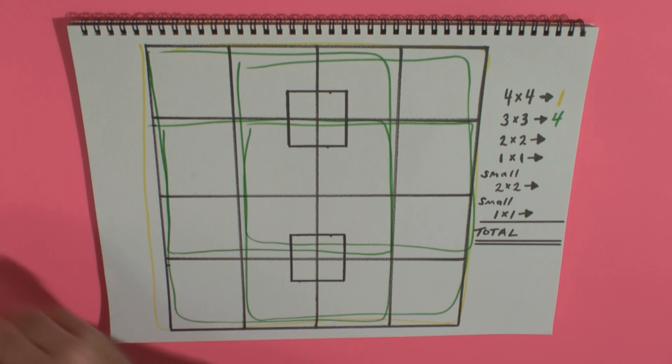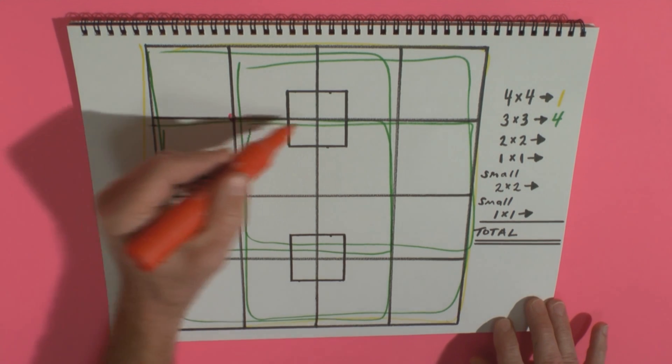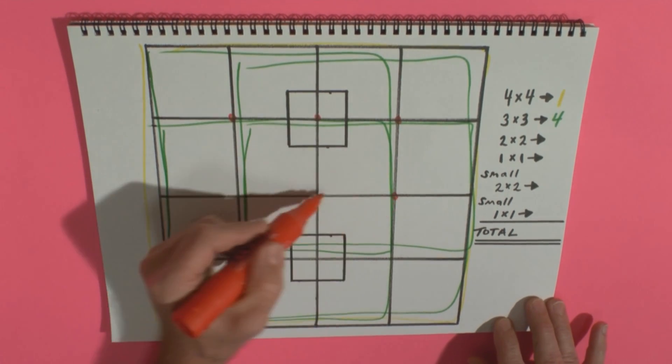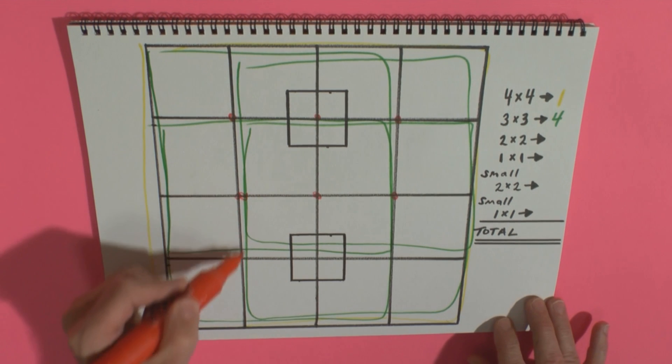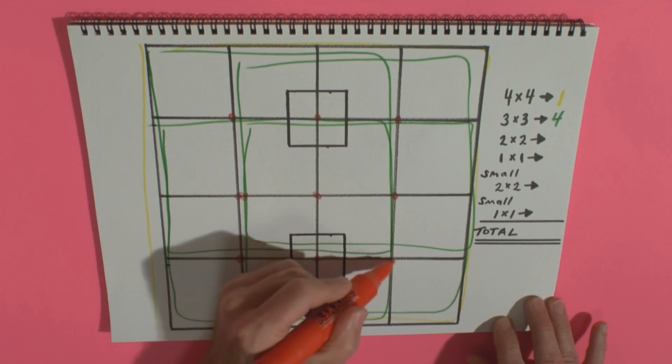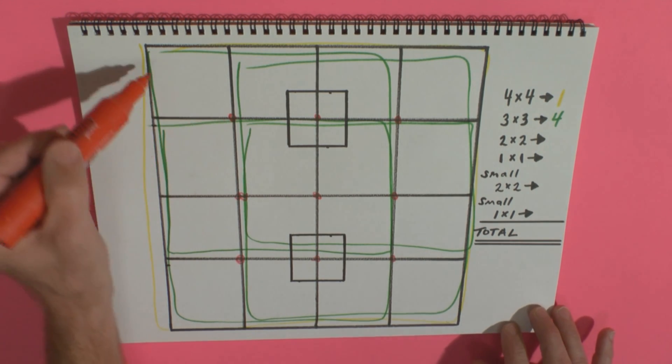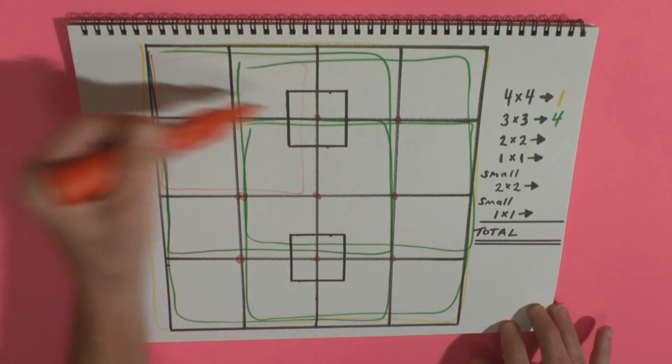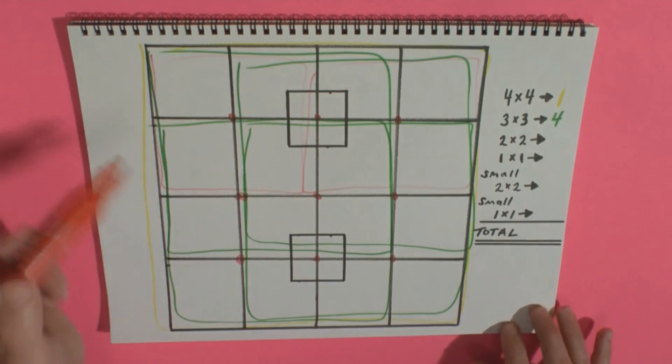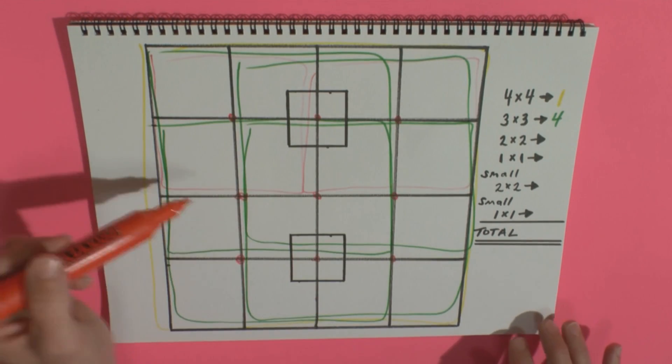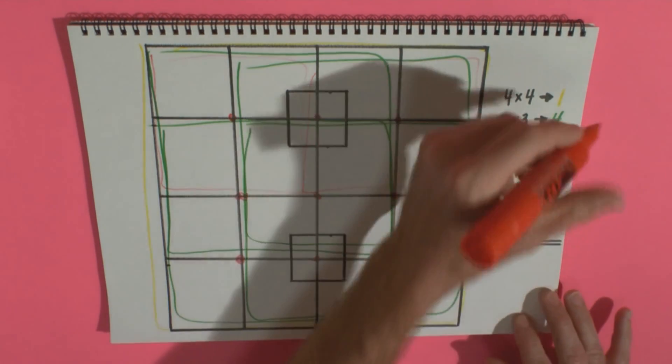Moving along, the two by two squares. The best way to do that is to identify the points in the middle, I think. So I'm drawing dots here. Each of these dots represents the center of a two by two square. And I'm not going to draw all of these, but you can see there's nine dots. So nine two by two squares.